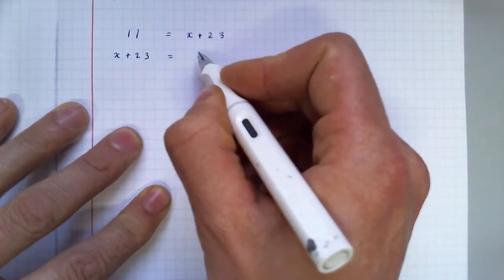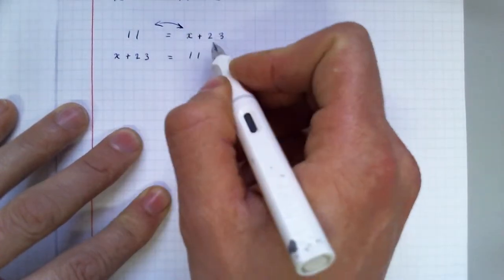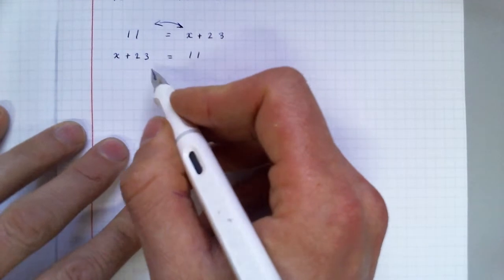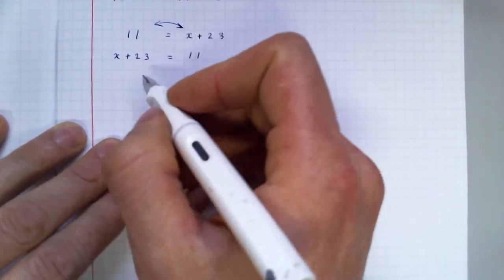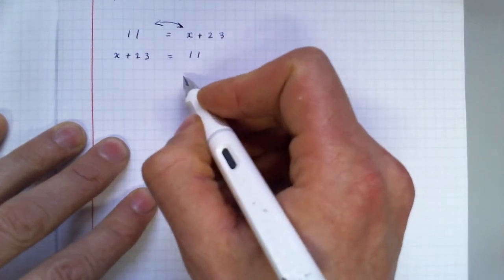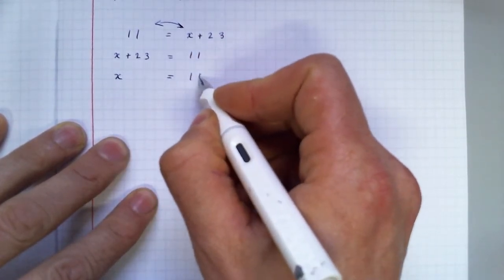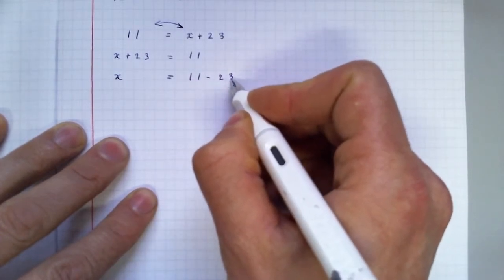So here we go. I've just thrown those over. So I've got my letter on the left-hand side. That makes me feel more comfortable. So I'm going to get rid of plus 23. So x equals 11 minus 23.